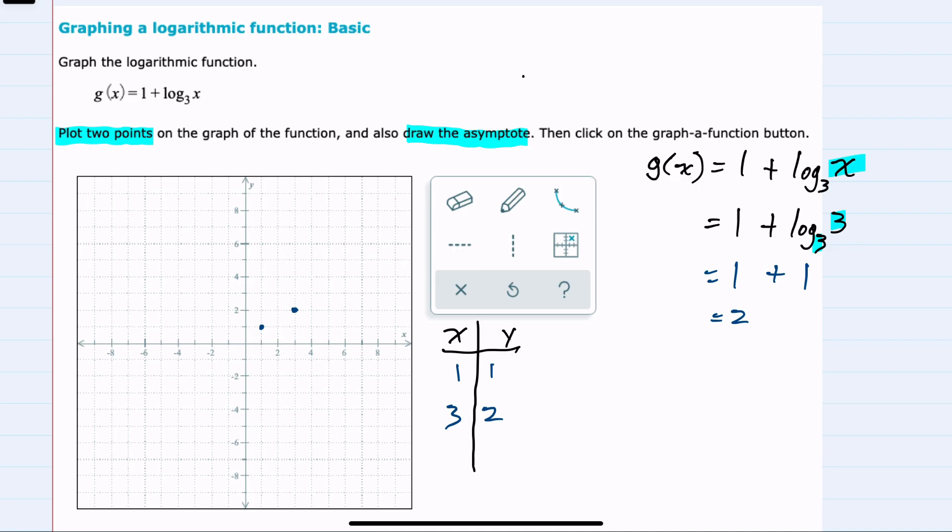For good measure, I'll go ahead and substitute a third point. And another friendly x value is 9. So substituting in 9 gives me the log base 3 of 9, which asks 3 to what power equals 9? And that would be 3 to the second power equals 9. So 1 plus 2 is 3. Our next coordinate is 9, 3.